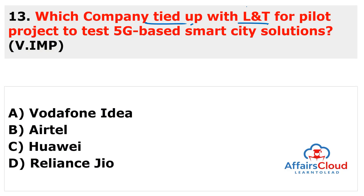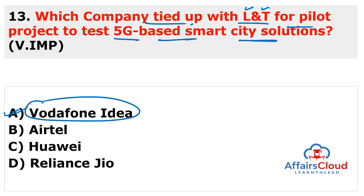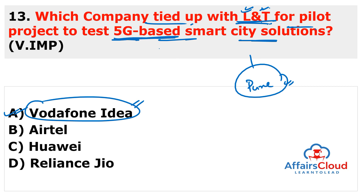Next question: which company tied up with L&T (Larsen & Toubro) for a pilot project to test 5G-based smart city solutions? The answer is Vodafone India. The two companies will partner to address challenges of urbanization, safety, and security, leveraging L&T's smart city platform. The pilot project will commence in Pune, Maharashtra, where 5G's high speed and low latency will enable improved surveillance, video streaming, and smart city and smart factory capabilities.